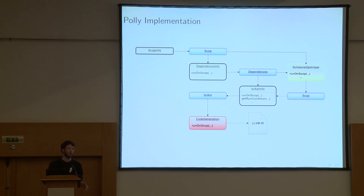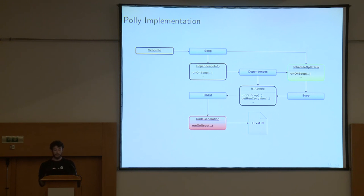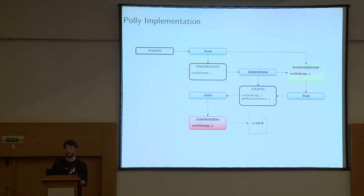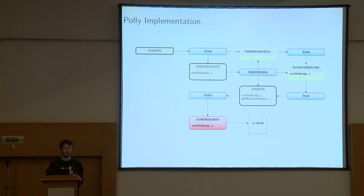If you want polyhedral optimization, you enable the schedule optimizer - which is enabled by default. It will transform your scop, changing the schedule of each scop statement using the dependencies to argue about legality, and gives you a new scop. Translating that new scop into an AST gives you completely different code. There is also dead iteration elimination - not enabled by default - which checks if some iterations of your region can just be left out, because they're overwritten anyway and don't produce values useful later.